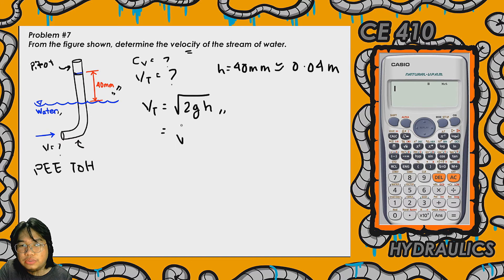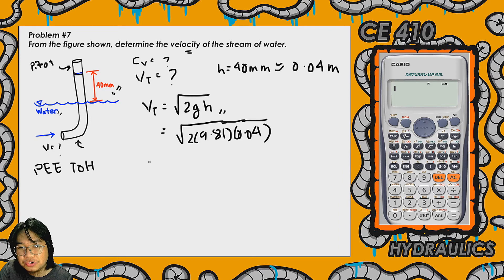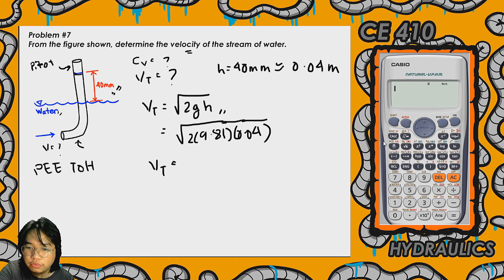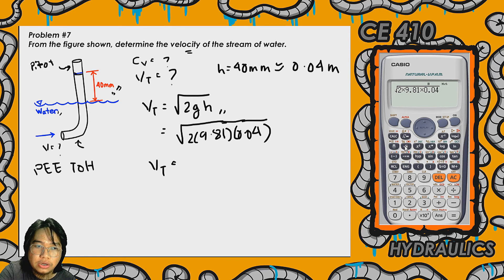That would be square root of 2 times 9.81 meters per second squared times 0.04 meters.